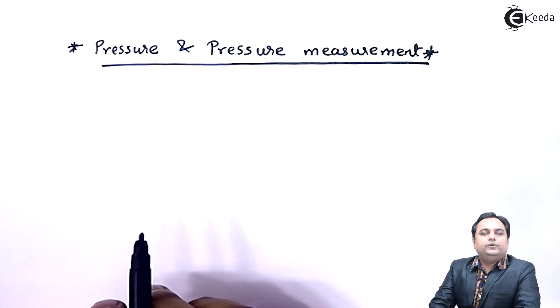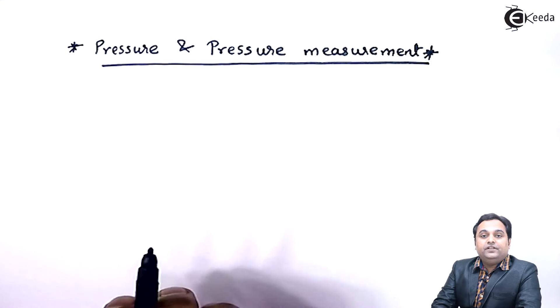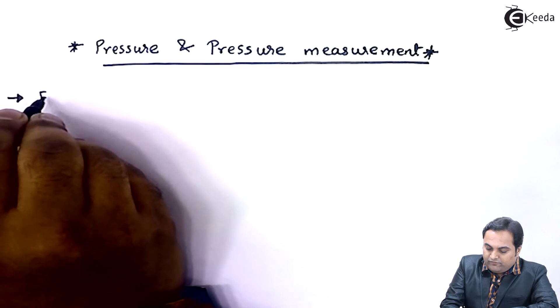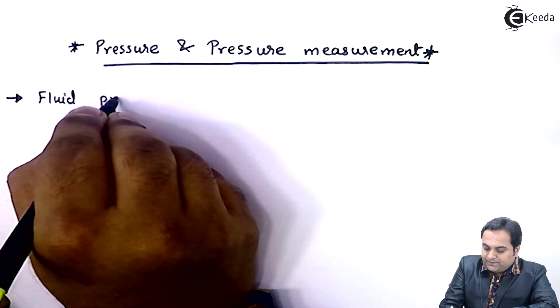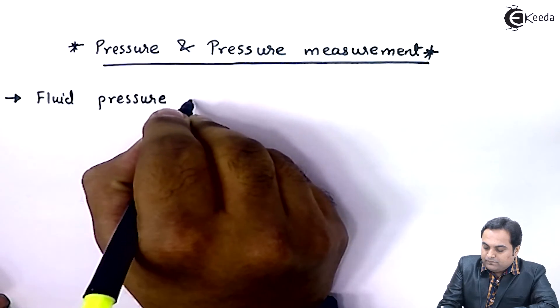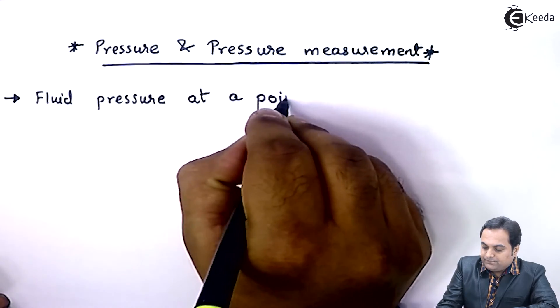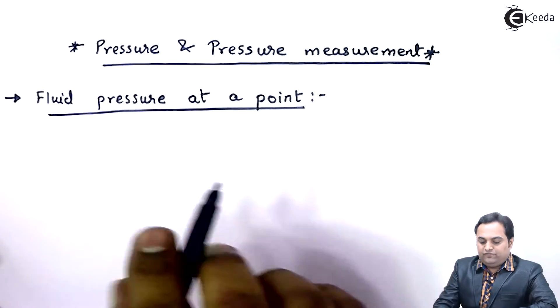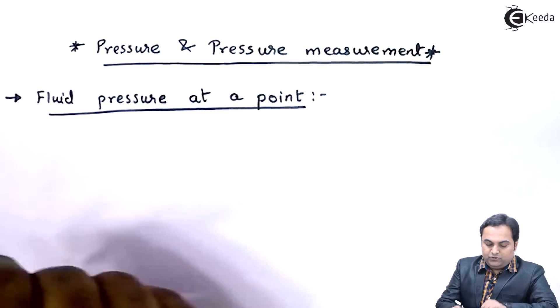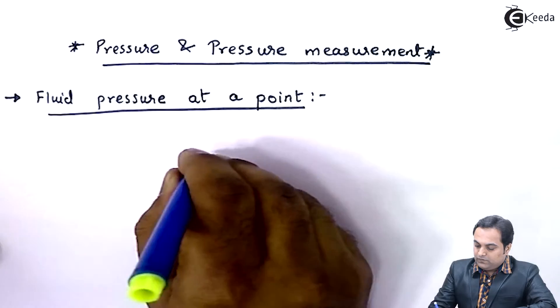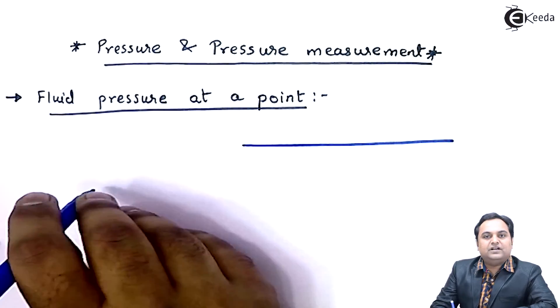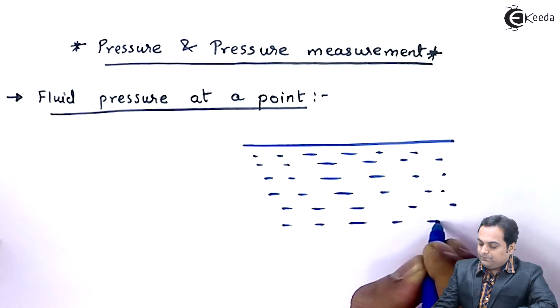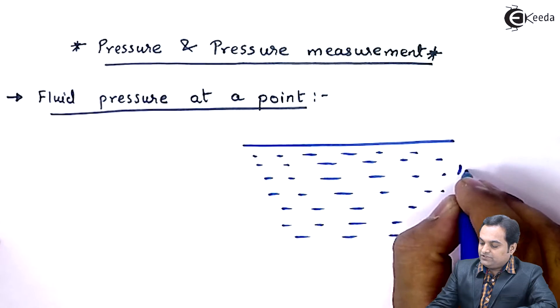When in fluid mechanics we are talking about pressure, it means fluid pressure. So the first heading is fluid pressure at a point. Now what is the meaning of this term fluid pressure at a point? Suppose we have a large mass of fluid. Here I am drawing the diagram.